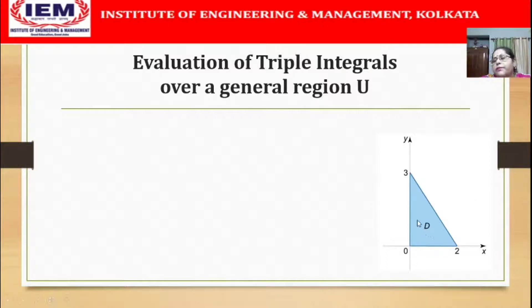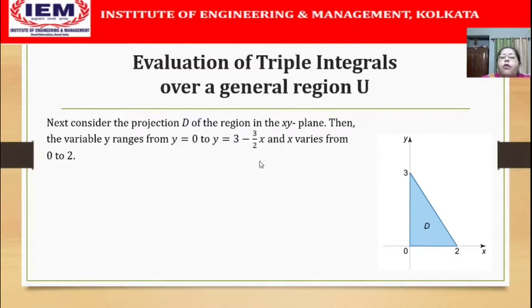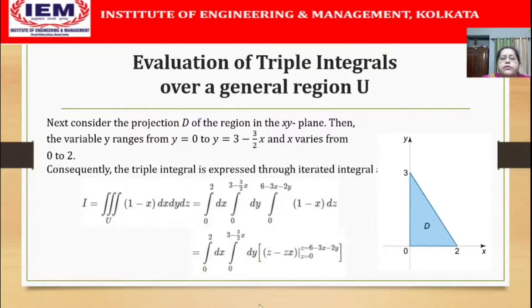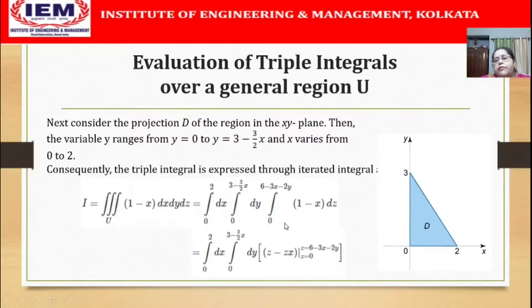The projection region D is a triangle where the boundary line is 3x + 2y = 6. For the limits of x and y over this projection region D, y will vary from y = 0 to the upper curve 3 - (3/2)x, and x varies from 0 to 2. Using these limits, the triple integral of (1 - x) dx dy dz over U can now be written out with z integrated first from 0 to 6 - 3x - 2y.